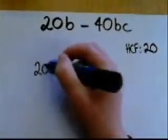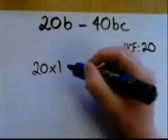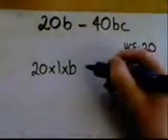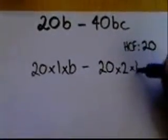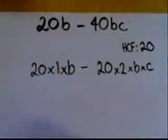Now how would you factor 20b minus 40bc? First of all, take out your highest common factor from the number part. The highest common factor of 20 and 40 is 20. Now we're going to rewrite 20 as 20 times 1 times by the B, just not forget the letters. And we're going to rewrite 40 now. 40 is 20 times 2, and again remember the B and remember the C.